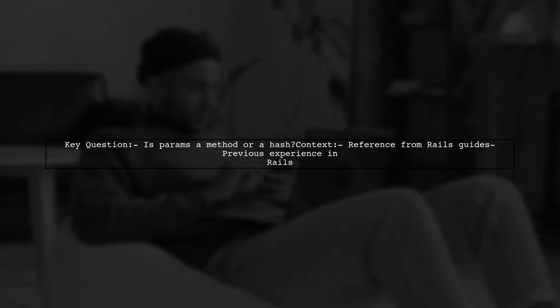To set the stage, our viewer is working through the Getting Started section of the Ruby on Rails guides. They stumbled upon a line that describes params as a method representing incoming form parameters. This raises an important question: if params is a method, how does it relate to the hash structure many developers are familiar with?